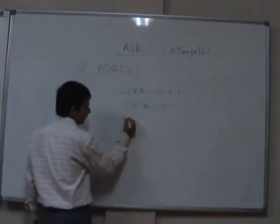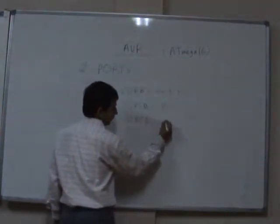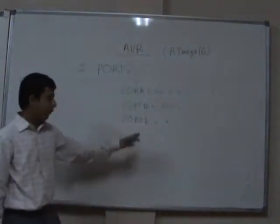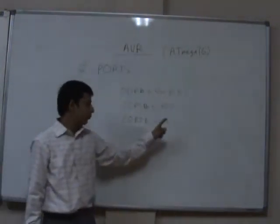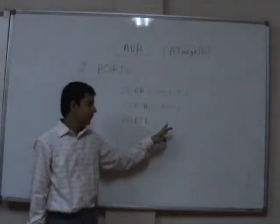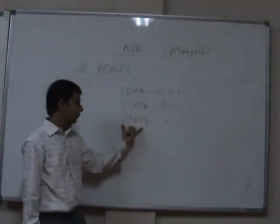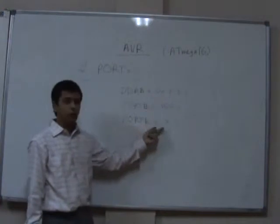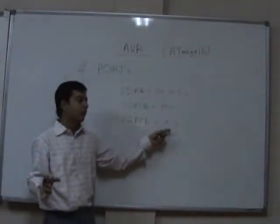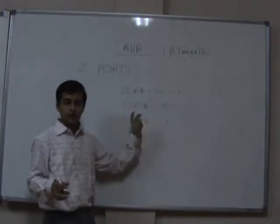If you want to write some variable, you can write PORTB = x. However, you have to make sure that this variable is an 8-bit variable. If it is a 16-bit variable and you write PORTB = x, only the lower 8 bits will be assigned to port B; the higher 8 bits will be ignored.